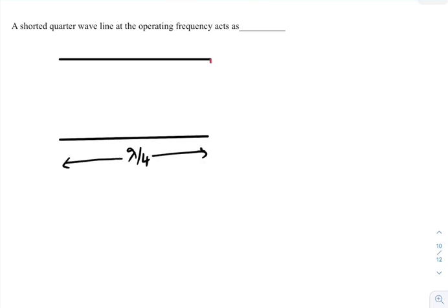A shorted quarter wave line at the operating frequency acts as an open circuit. I am going to take a transmission line whose length is quarter wave, that means lambda by 4, and the output terminal is shorted, that is a short circuit connection.